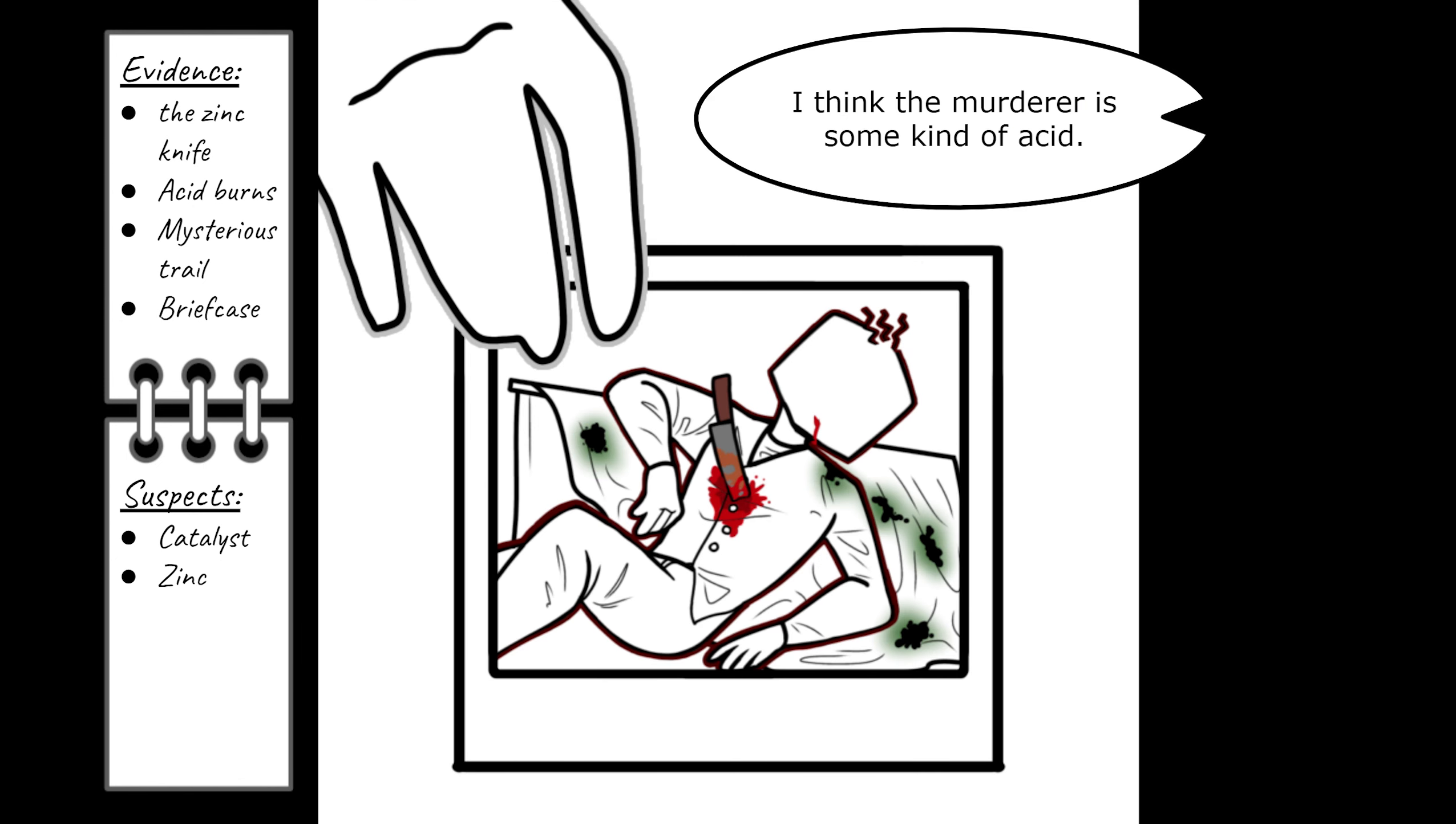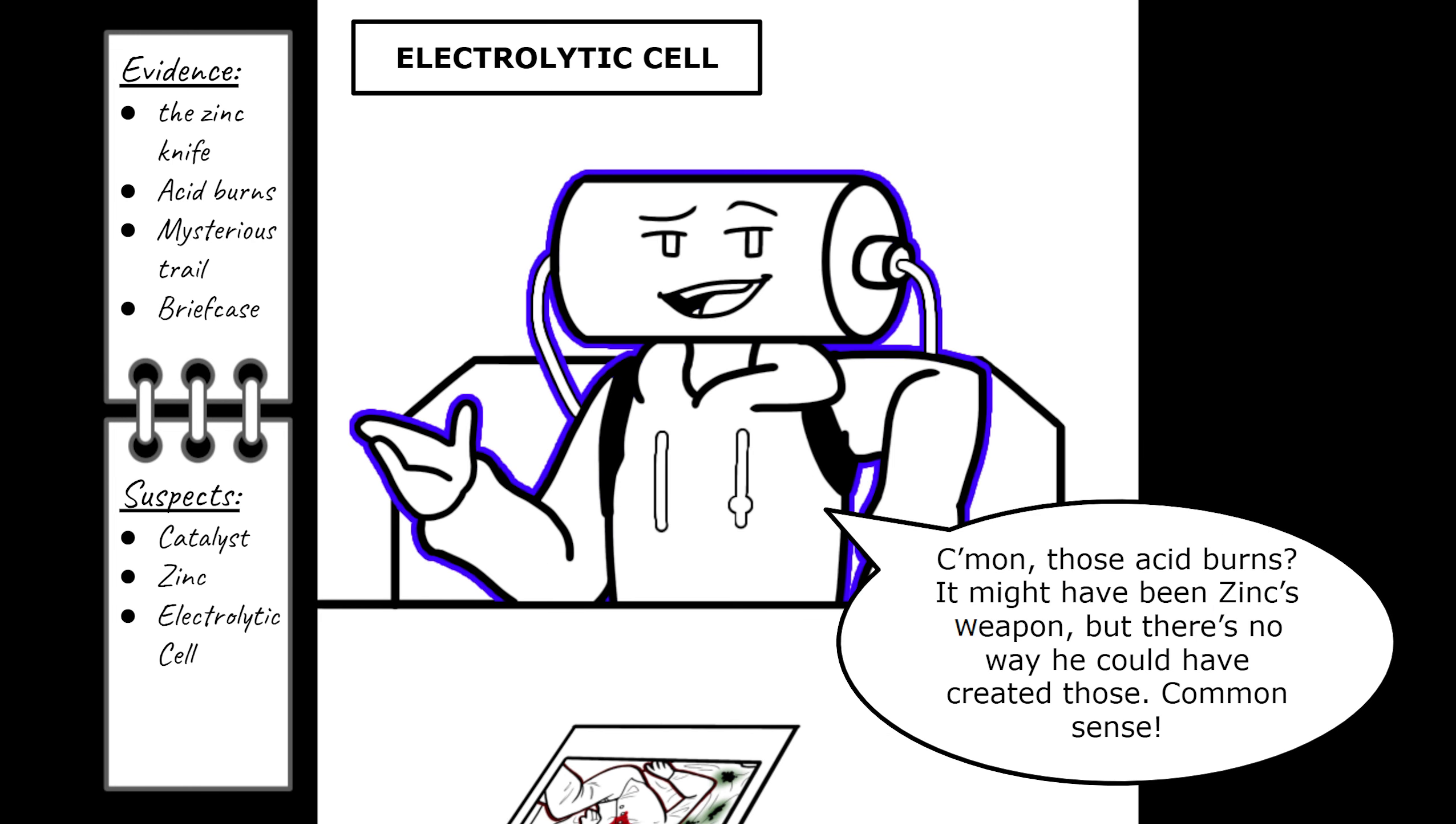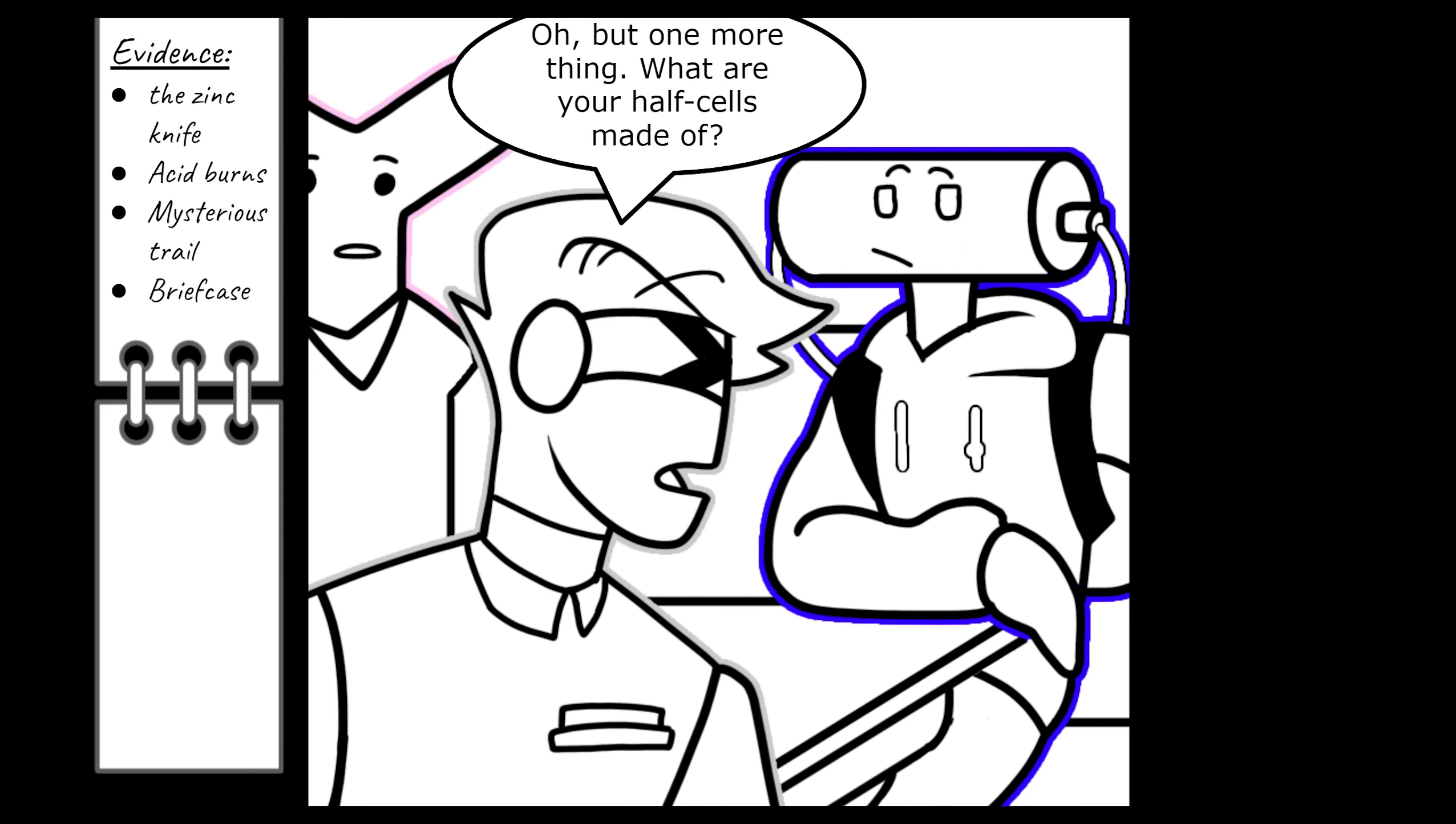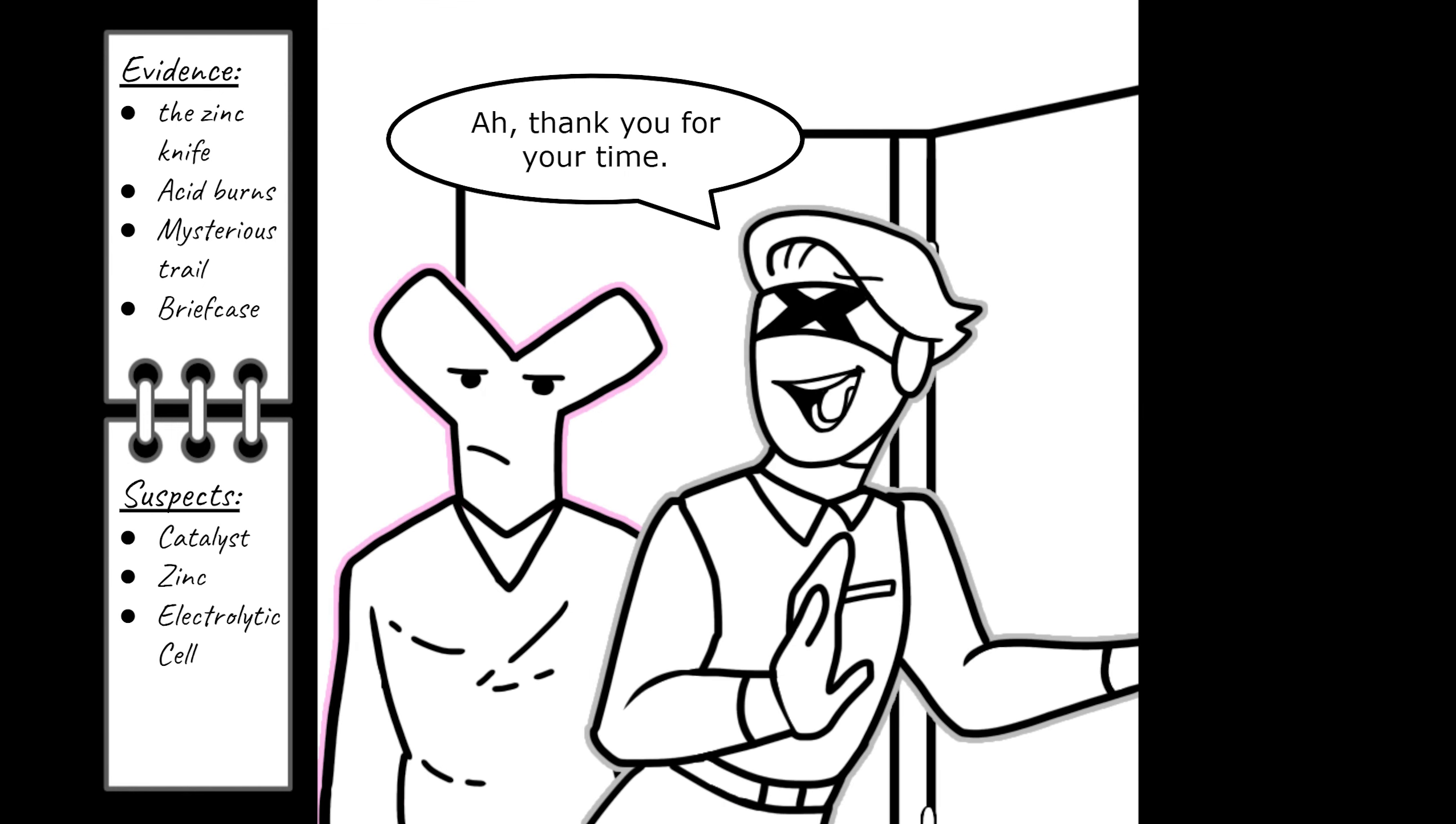I think whoever did this used some sort of acid. And why is that, Mr. Electrolytic Cell? Come on, those acid burns? It might have been Zinc's weapon, but there's no way he could have created those. Common sense. I see. Then that's all I had to ask you today, Mr. Cell. Oh, but one more thing. What are your half cells made of? I have a copper anode and a zinc cathode. You can tell by the direction my electrons are moving. Thank you for your time.